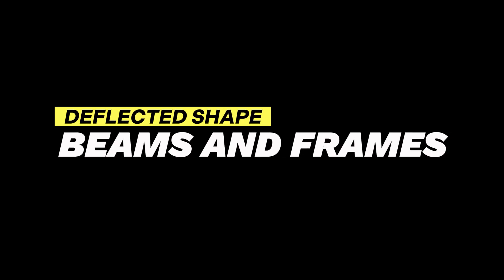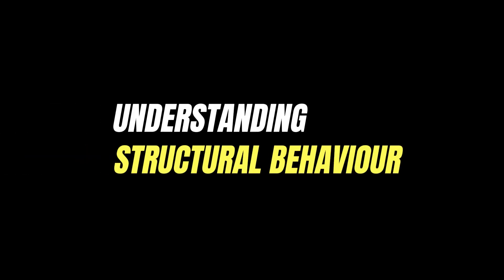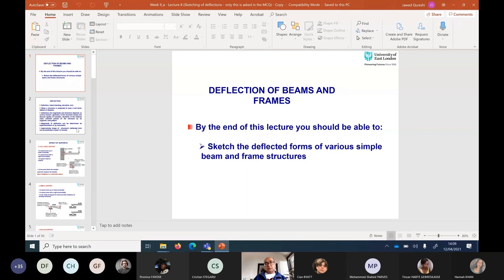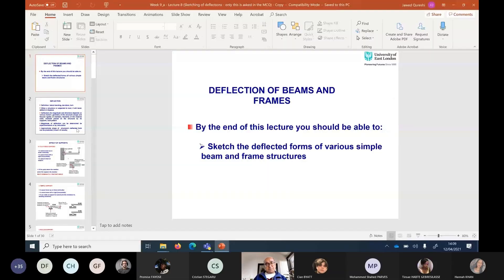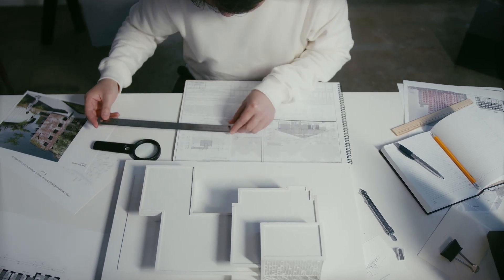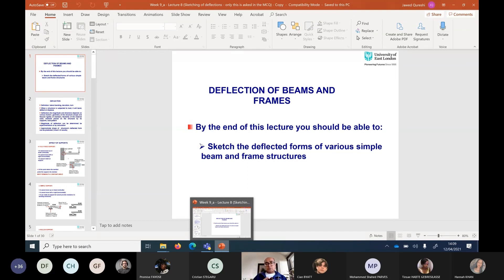In today's lecture, I'm going to talk about deflection of beams and frames. Understanding how beams deflect is extremely important and is part of understanding structural behavior. If you understand how structures deflect, the chances are that you're not going to make any mistake, even if you're using a computer to analyze structures. The concepts are really very simple when it comes to deflections. Imagine if you have a ruler in your hand, holding it on two sides and applying a load in the middle — it is going to deflect in the middle. And if the ruler is placed on your fingers, it is going to rotate at the ends as well.